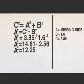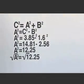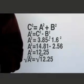Now, to find the value of A, we square root A squared at 12.25 which gives us A is equal to 3.5 inches.